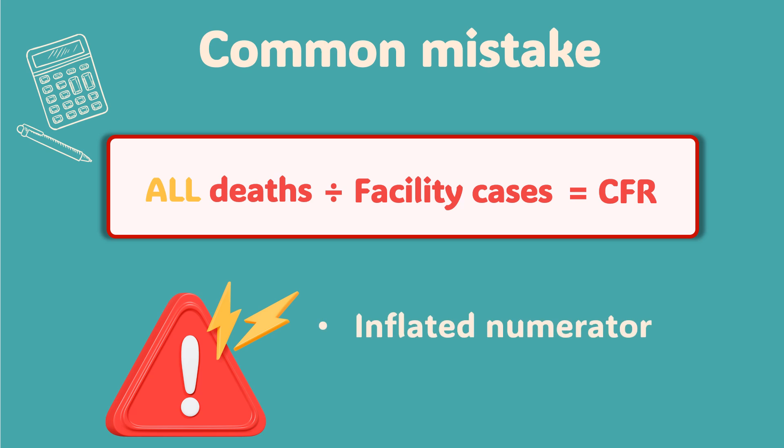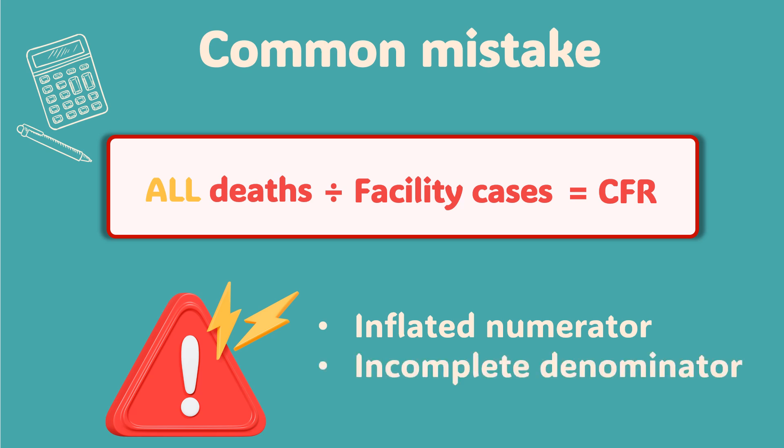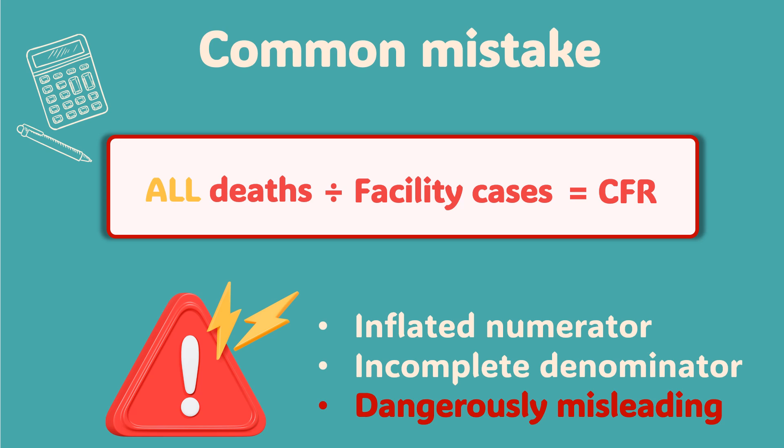Deaths are dramatic. They're visible. They get noticed and reported, even in communities. But what about all the other people in that same community who got sick with milder cases and just recovered at home? They're invisible in your data — they never showed up at a health facility, they never got counted. So when you include community deaths in your CFR, you're inflating the numerator with deaths from everywhere, but your denominator only counts cases from health facilities. It's mathematically biased, epidemiologically wrong, and it gives you a dangerously misleading picture of your outbreak.